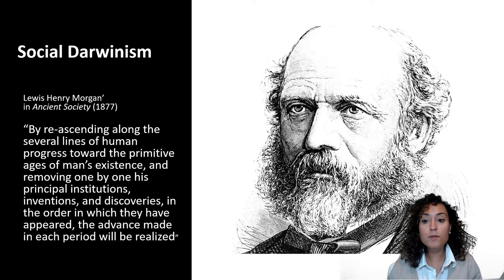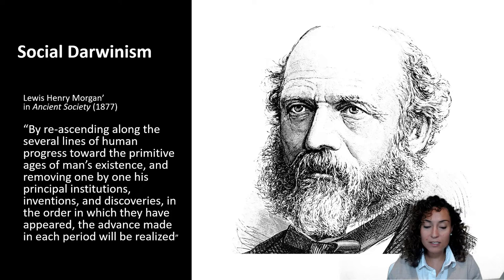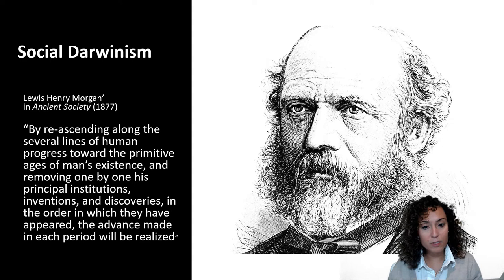19th century anthropologists took up Darwin's ideas and argued that like all other organisms, people struggle to survive and the successful ones are the fittest. These anthropologists ranked human societies according to their evolutionary status and argued that all human progress depends on competition. While drawing on evolutionary theories, they still retained many of the same racial hierarchies that Blumenbach and Morton had used. One early anthropologist who contributed to ideas about social evolution was Lewis Henry Morgan, who wrote Ancient Societies.